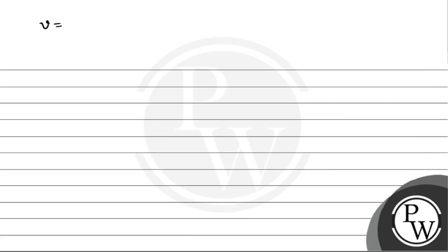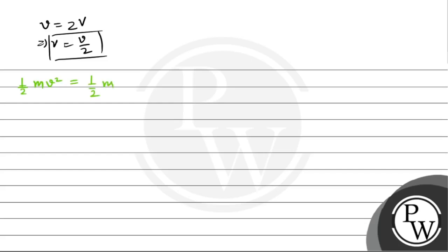So V equals v/2. Now we apply conservation of energy: half·m·v² (kinetic energy of block C) equals half·m·V² + half·m·V² (kinetic energies of blocks A and B) plus half·k·x² (elastic potential energy of the spring). Cancelling half from both sides: m·v² = m·V² + m·V² = 2m·V² + k·x².